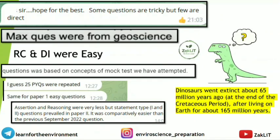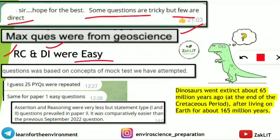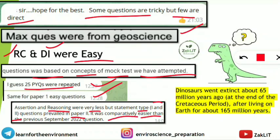Based on candidate reviews: some questions were tricky but many were direct. Maximum questions were from geoscience; reading comprehension and data interpretation were easy. Questions were based on concepts from mock tests, which helped those who had practiced them. Approximately 25 previous exam questions were repeated on average. Paper 1 had easy questions; assessment and reasoning were very less. Statement-type questions (Statement 1 and Statement 2) prevailed in Paper 2. Overall, it was comparatively easier than September 2022.